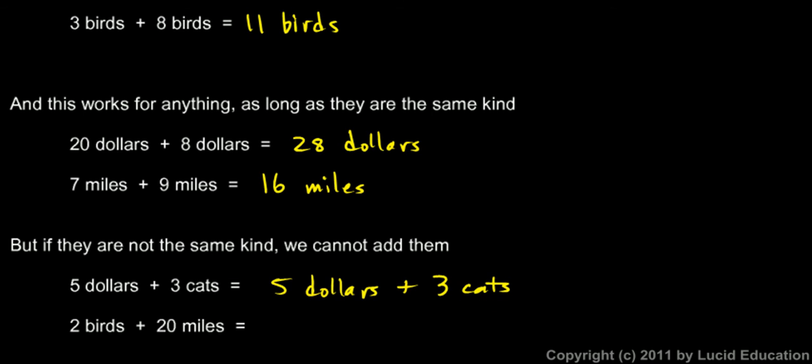So if you have two birds and twenty miles, you can't combine those. All you can say is that you have two birds and twenty miles. You don't have twenty-two of anything. So you can't combine these two items that are of different kind.